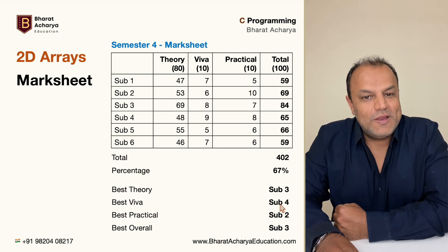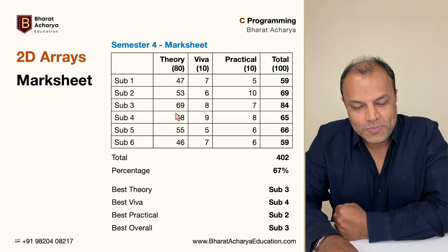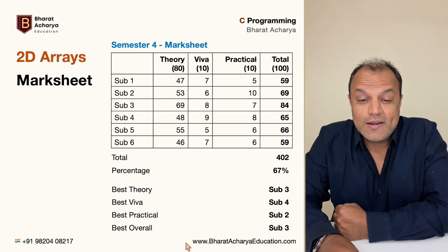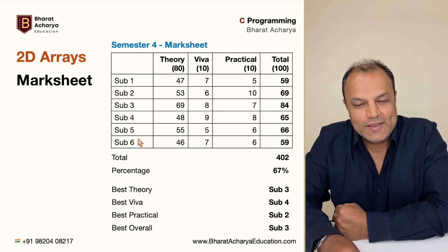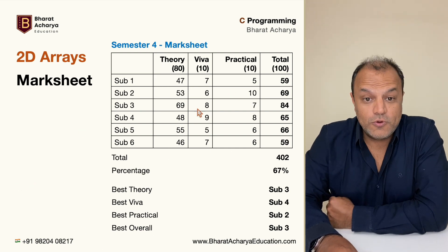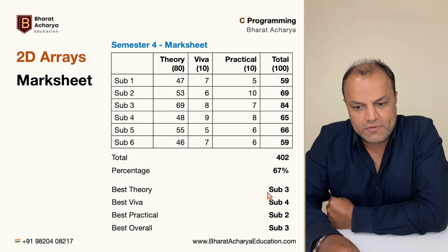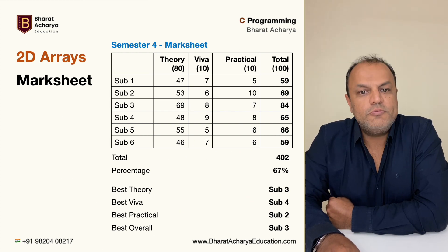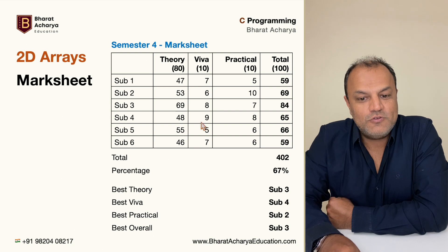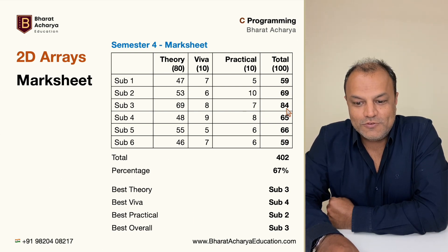So subject number three — again, like I said, you may write the name of the subject or you may just write subject three and put a key at the end. That's the way you want to present it. If you keep it like this, then it becomes standard and works for every semester. Subject with the best Viva, which in this case happens to be subject four. You may have multiple subjects; you may choose whether you want to display both names or one. I'm choosing the first one encountered with the highest value. Best in practicals is subject two, and best overall — out of the total — happens to be subject three.